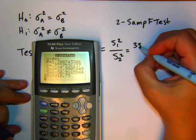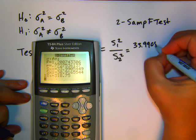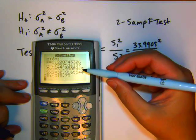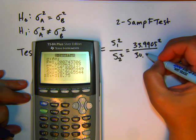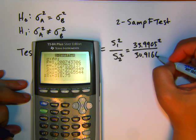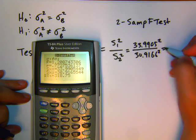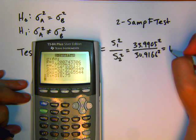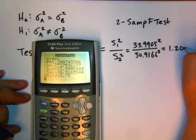Go to CALCULATE and hit ENTER. And what it's going to give us is the standard deviations for each group. So S1 was 33.9905 and S2 is 30.9166. So when I square those and divide, that gives you my test statistic is 1.2087.